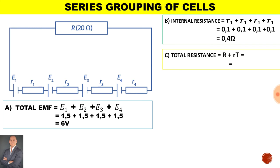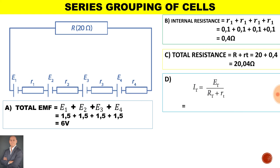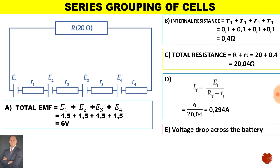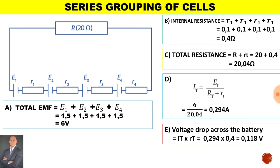To calculate the total current throughout the circuit, it will be the total EMF divided by the resistance total. Therefore 0.294 amps. To calculate the volt drop across the battery when there is a closed circuit, it will be the total current multiplied by the internal resistance of the battery. Therefore the potential difference across the battery with a closed circuit is 0.118 volts.